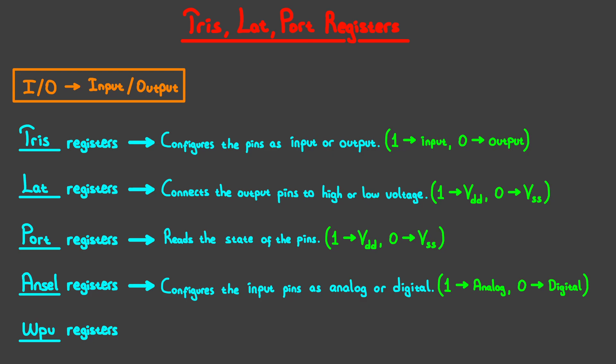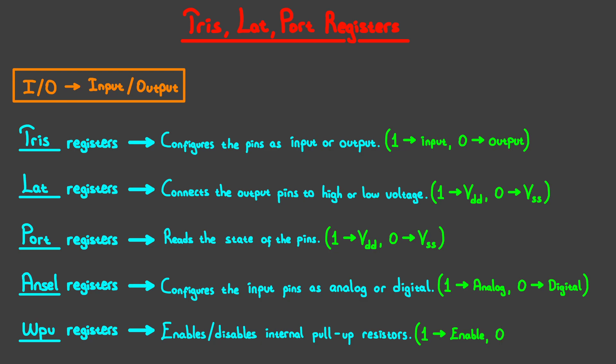Bits in the WPU registers — so WPU bits — will enable or disable the internal pullup on their corresponding pins. Not every pin has an internal pullup capability, hence not every pin will have a corresponding WPU bit. Putting 1 in a WPU bit will enable the internal pullup on their corresponding pin, while putting 0 will disable it. This is the basic explanation for each register. Now we'll go deeper in and understand how all of this works.